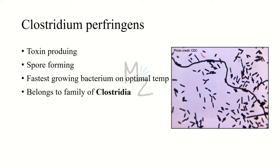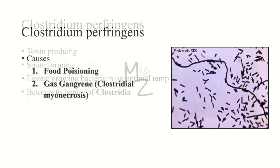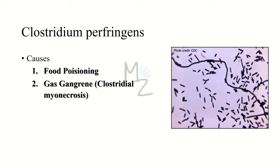Clostridium perfringens thrives in the soil and doesn't require oxygen — in fact, oxygen is toxic to it. When it encounters oxygen, it produces spores, which are resilient to the environment and can even survive cooking. When food is slowly cooked or stored, fully-fledged Clostridia are formed. Clostridium perfringens is the fastest growing bacterium at optimal temperature. It is responsible for causing two distinct diseases based on the route of entry: food poisoning and gas gangrene, also called clostridial myonecrosis.